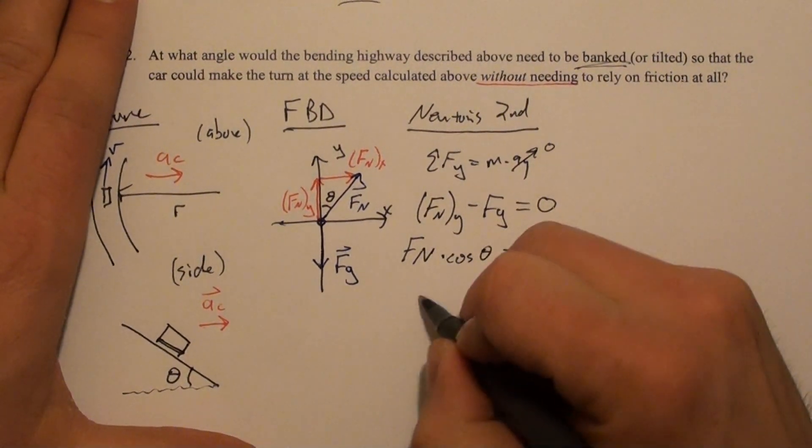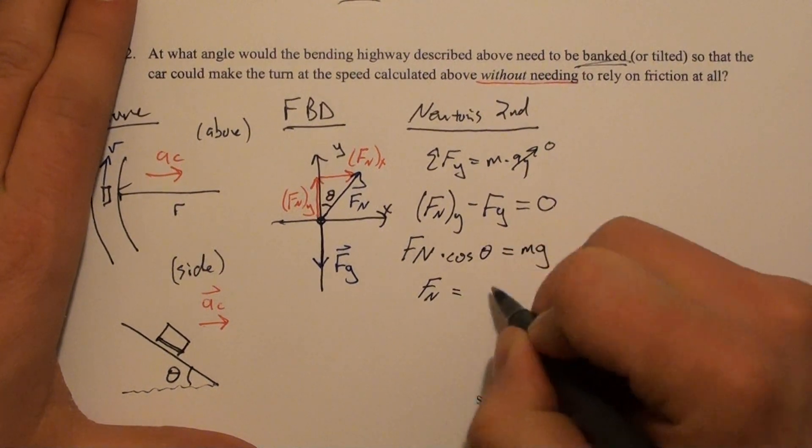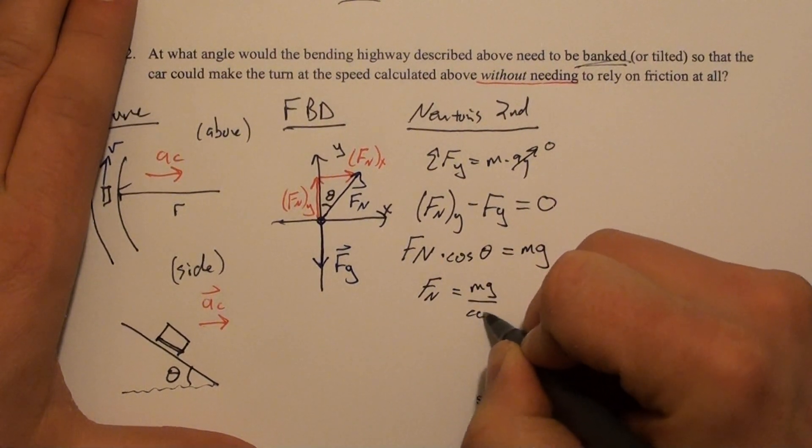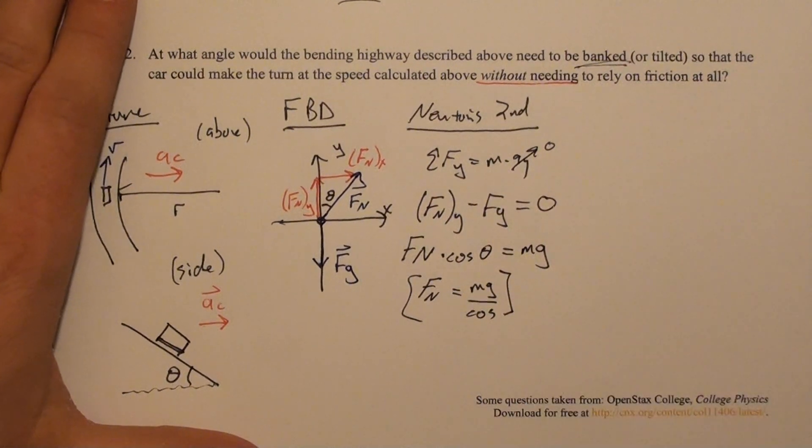I could solve for the normal force: F_n equals mg divided by cosine θ. This is going to be useful. Let's remember that.